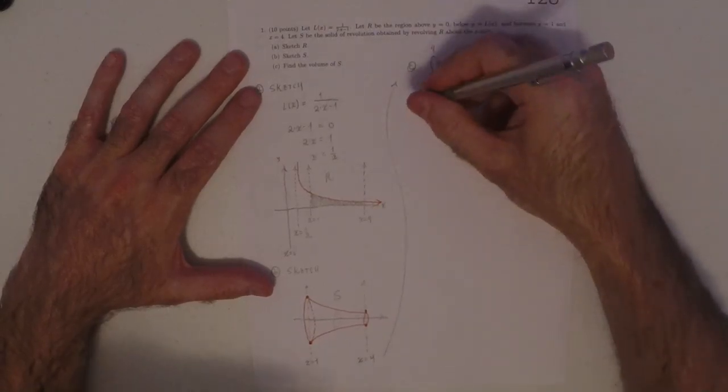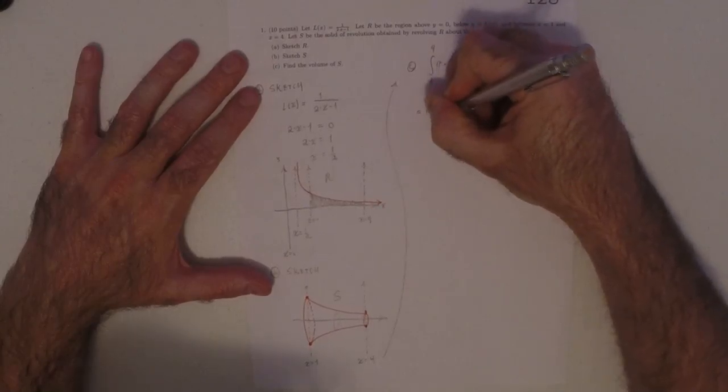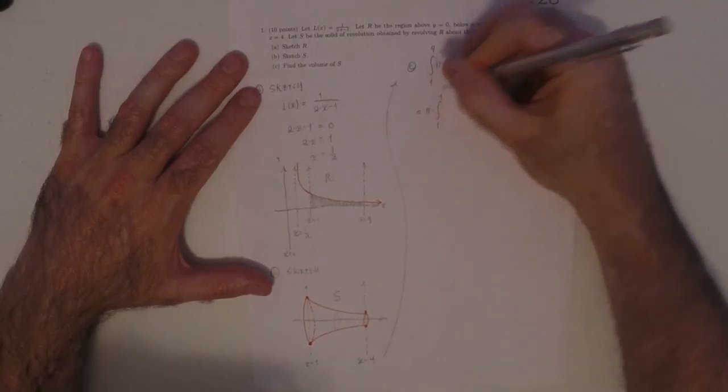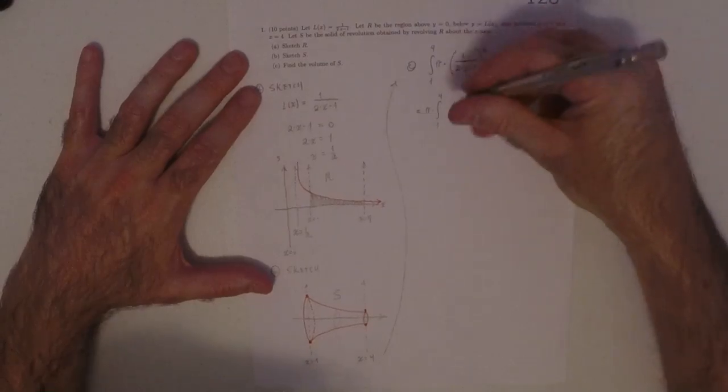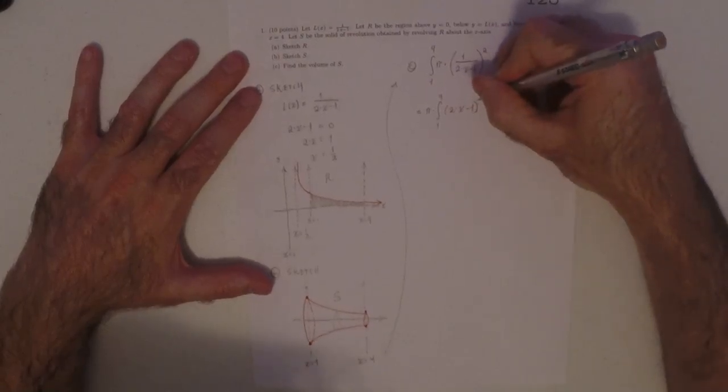All right. So then a little bit of simplification is helpful. So pi integral 1 to 4.